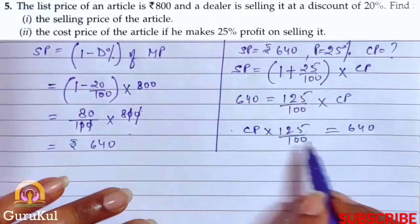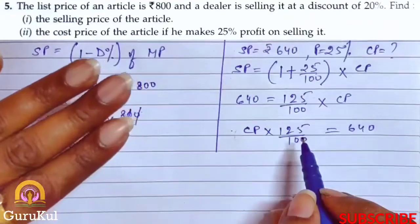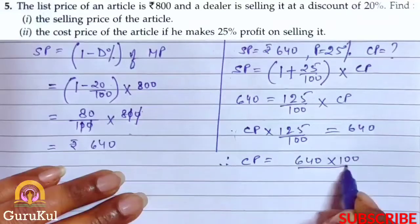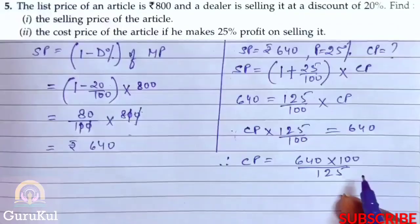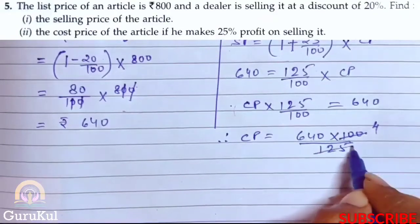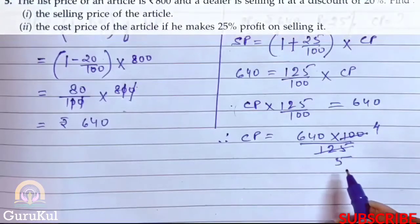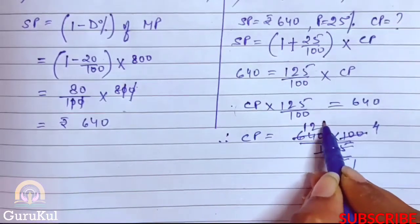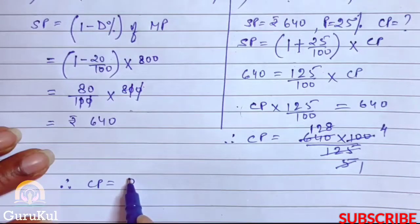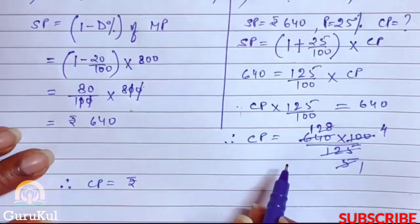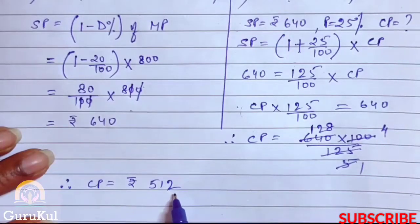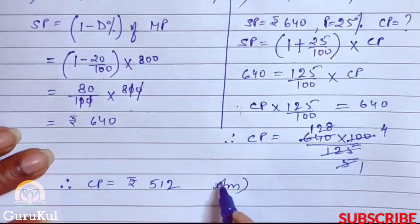So cost price into 125 by 100 equals 640. Why do we do this? Because always remember, what you want to find out, keep it on the left hand side. Hence CP equals 640 into 100 by 125. This gives us cost price equal to 512. So cost price will be 512 if the article is sold at the profit of 25%. This is the answer.